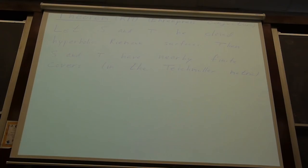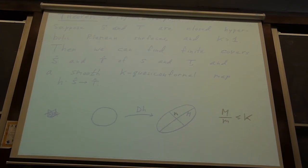The first theorem, known as the Ehrenpreis conjecture, is: given two closed hyperbolic surfaces S and T, they have nearby finite covers. More precisely, given some k greater than 1, we can find finite covers and a smooth quasi-conformal map between those finite covers.